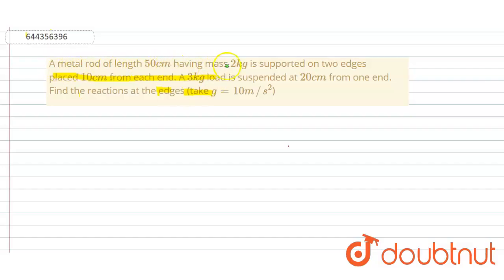A metal rod of length 50 centimeters having mass 2 kg is supported on two edges placed 10 centimeters from each end. A 3 kg load is suspended at 20 centimeters from one end. We have to find the reactions.